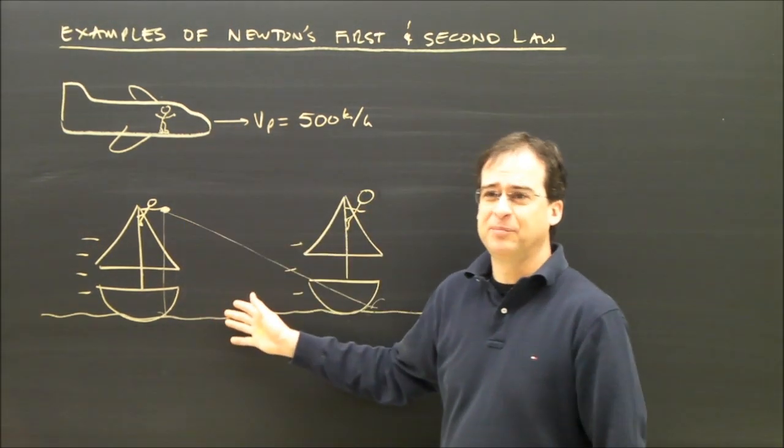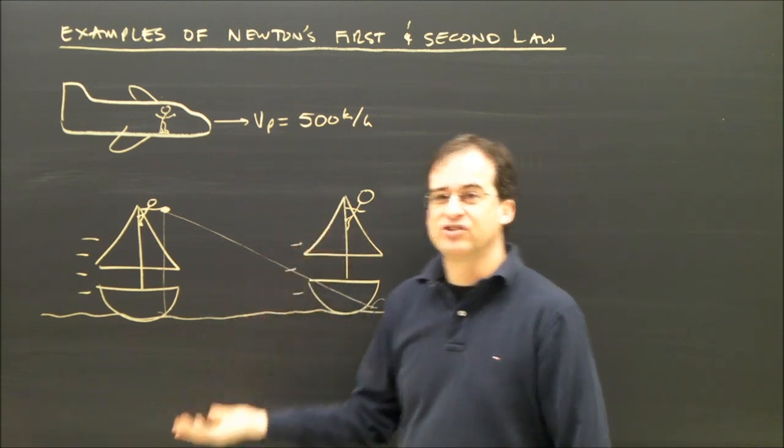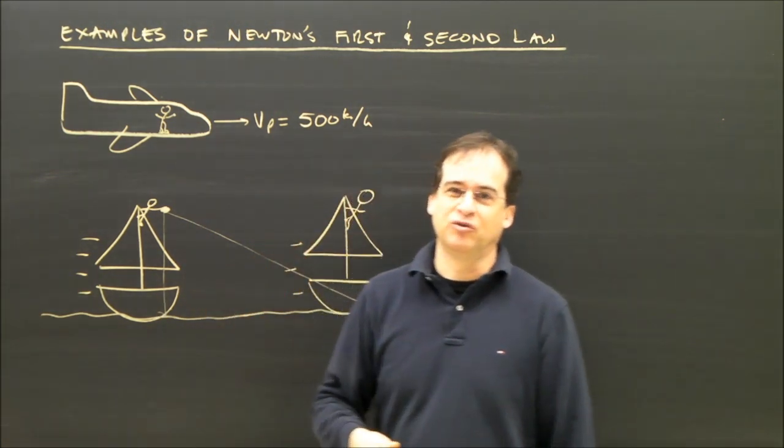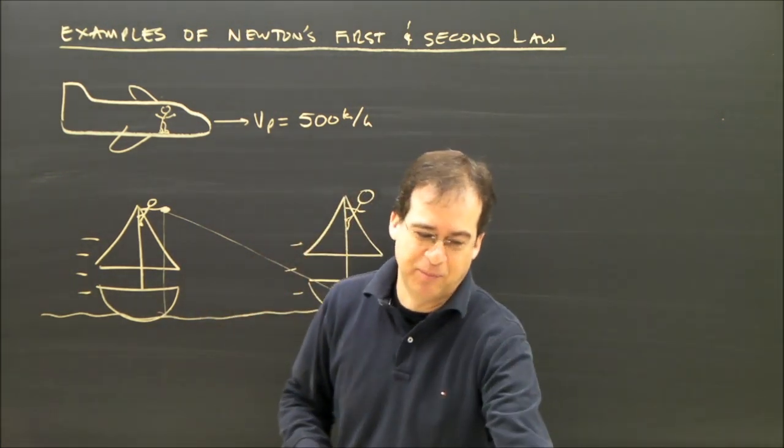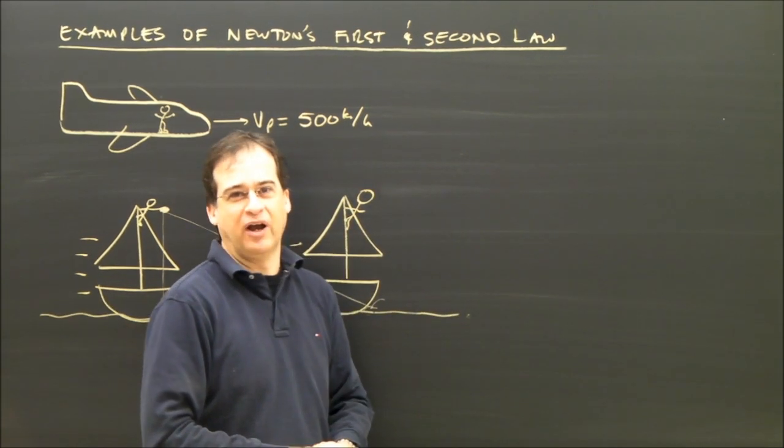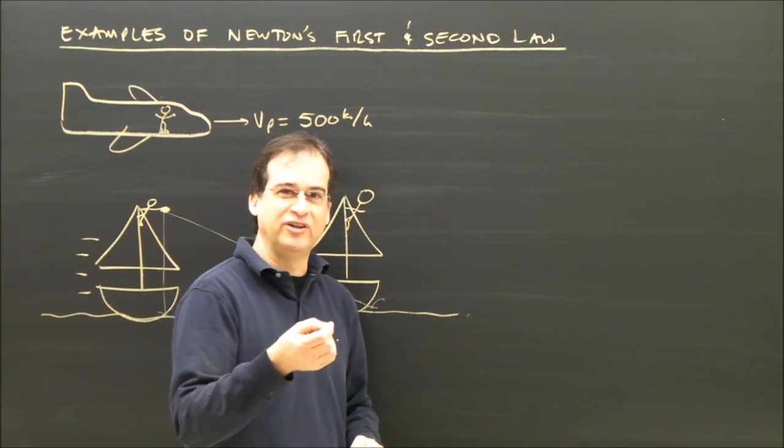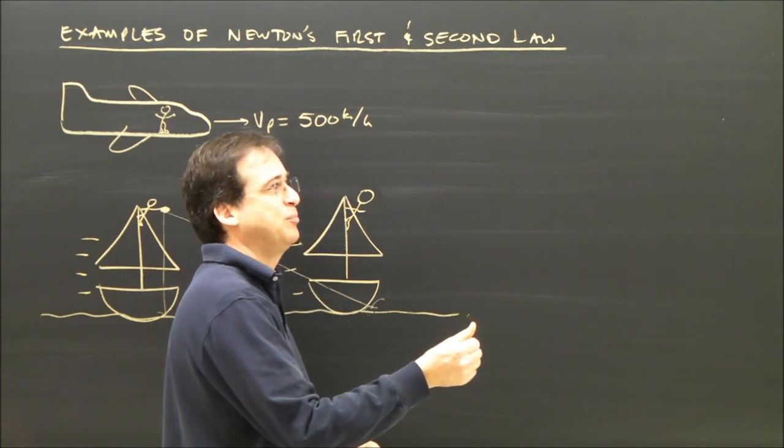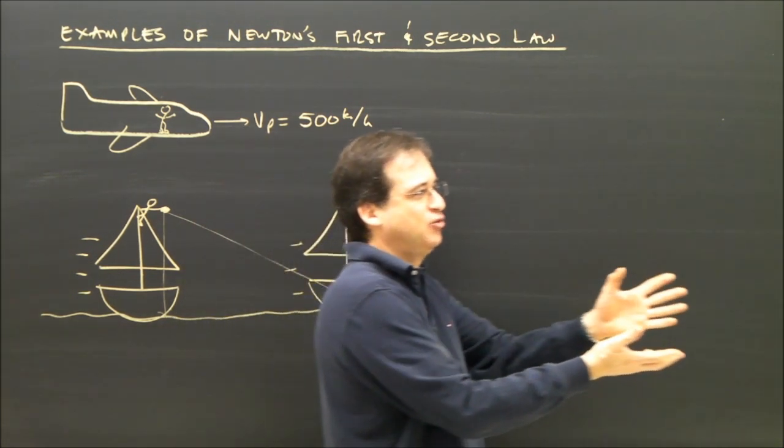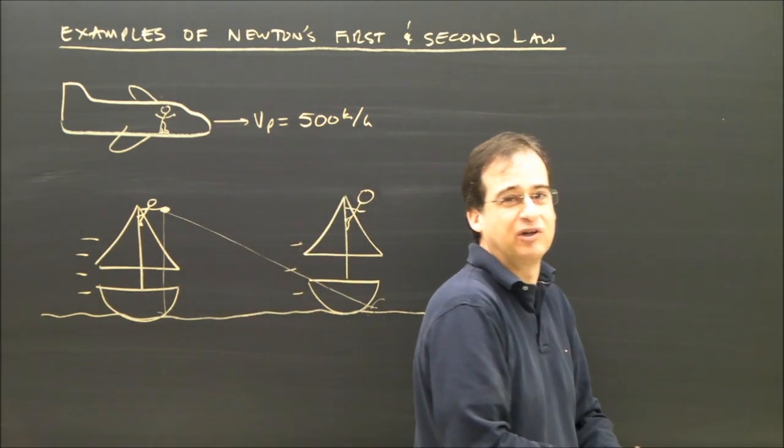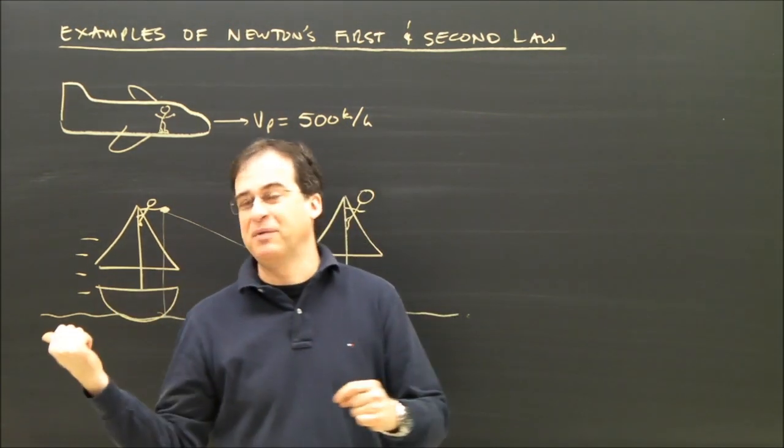So here's two examples of objects with the forces on them balanced, so they continue doing what they're doing. Another good example is, you're in your car driving at 100 kilometers per hour this way, and you've got a coin in your hand. If you flip the coin up in the air, does the coin continue with you in the car moving forward at 100 kilometers per hour, or does it end up in the back seat?